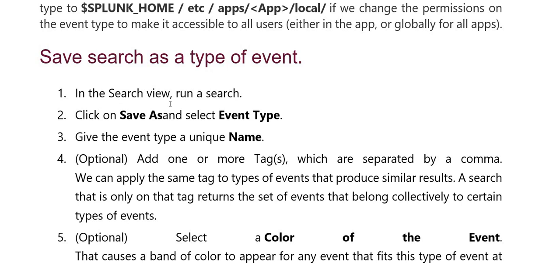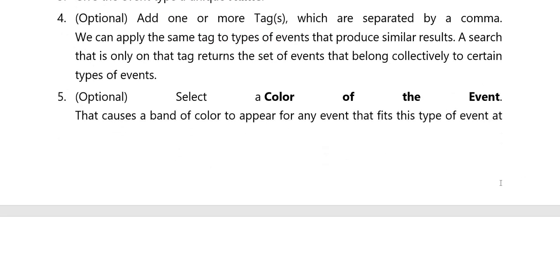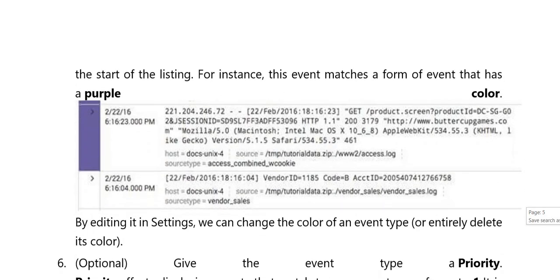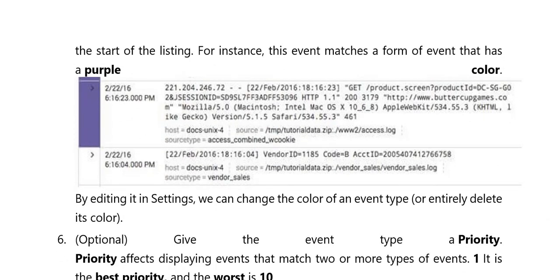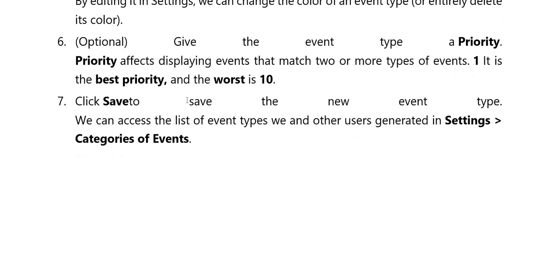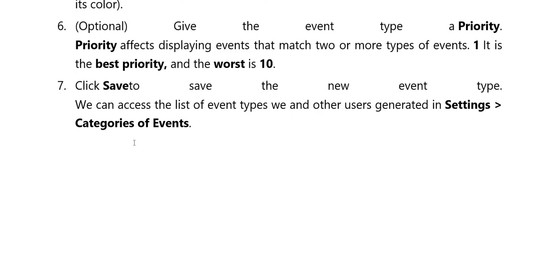Save search as a type of event: run the search in the search view. Second, click Save As and select event type. Third, give the event type a unique name. Fourth, optionally add one or more tags, separated by commas. Fifth, optionally select the color of the event. Sixth, optionally set the priority which affects how events are displayed, from best priority to worst. Seven, click Save — the new event type will be saved and you can access the list of event types.